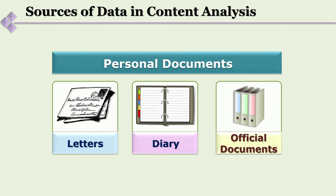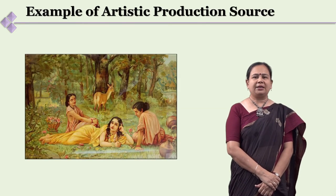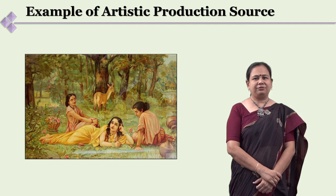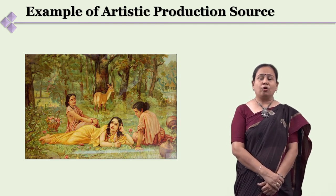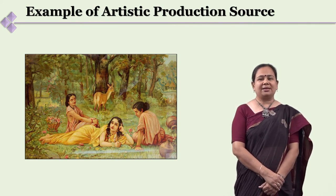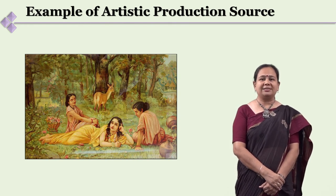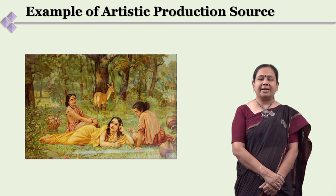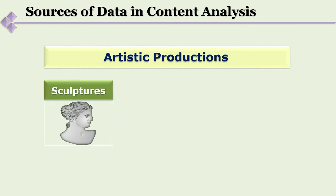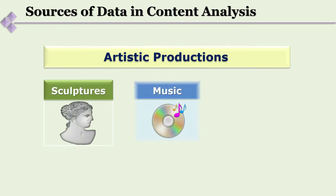It gives us a lot of ideas and information about that particular time and era. Another interesting source of data is artistic productions — for example, paintings by Raja Ravi Varma. Artistic productions tell us about the way artists perceived or defined the world. One can take up sculptures, musical pieces, paintings — anything an artist has created.